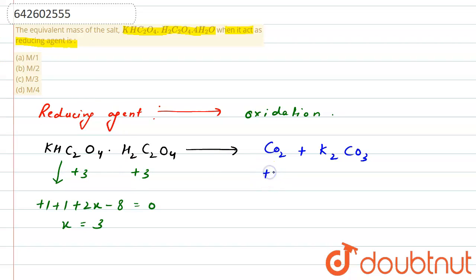Now, it is going to plus 4. So, the change in oxidation state of carbon is plus 1. Right?